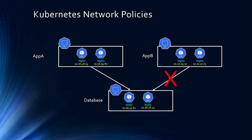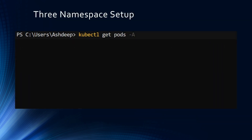This is what you achieve using Kubernetes network policies. Using network policies you can control traffic flow at the IP address or port level, which is OSI layer 3 or 4, between these pods. This is great for multi-tenant clusters where you are running multiple applications or sharing the same cluster for development, test, and production.